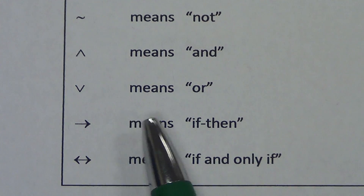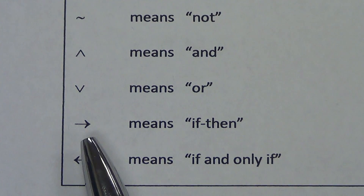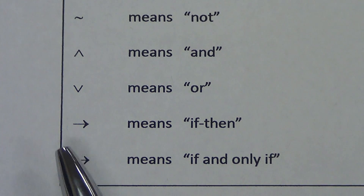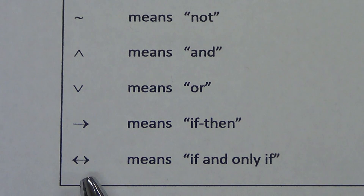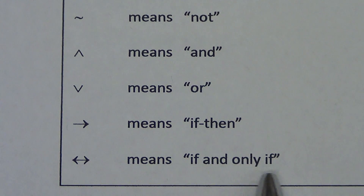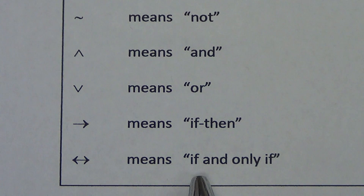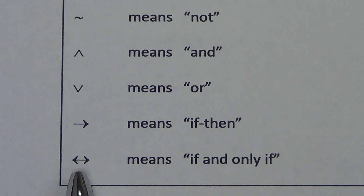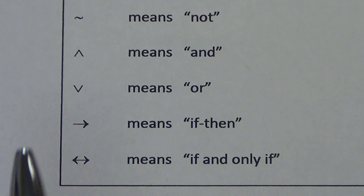We're already familiar with this next symbol — this is our 'if-then,' which we used when we did 'if P then Q' and things like that. And this one is our 'if and only if.' Remember, if and only if is two different conditionals: kind of a forward version and the converse, the backwards version. So you can see the arrows pointing both ways, saying it goes both directions — it's two different conditional statements.